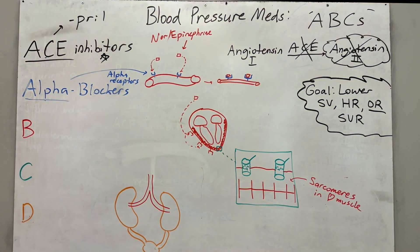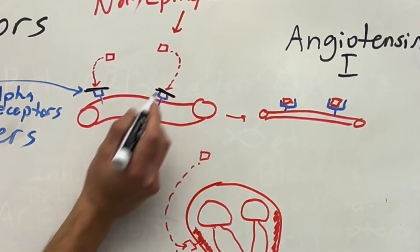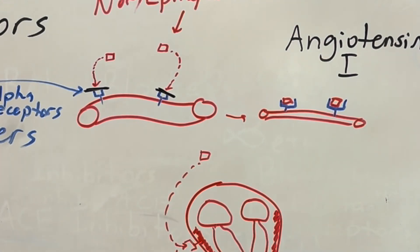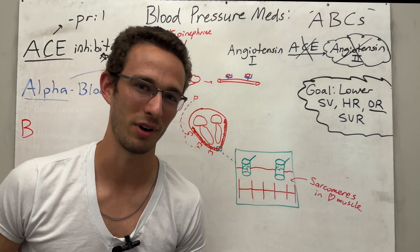So once again, if we vasoconstrict, we're increasing our systemic vascular resistance, that's increasing blood pressure. So we take alpha blockers. What does that do? It's in the name, right? We're going to block epinephrine from binding with these drugs. Therefore, the blood vessels will stay dilated, therefore decreasing systemic vascular resistance, opening those up, therefore decreasing blood pressure. Wonderful.